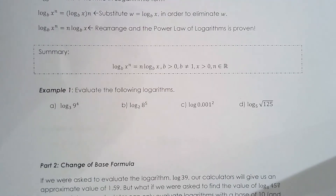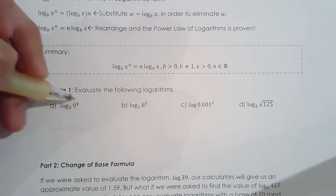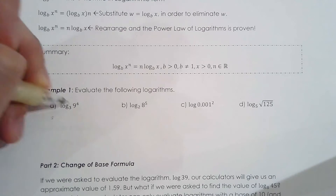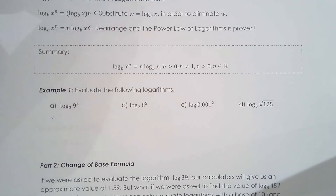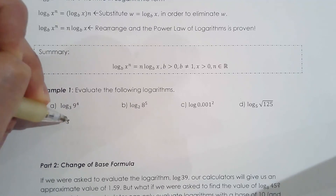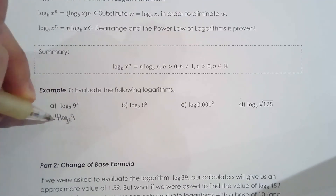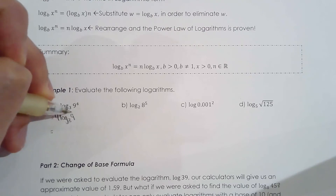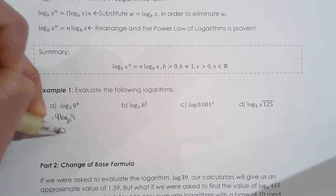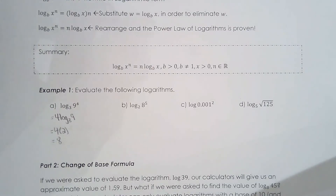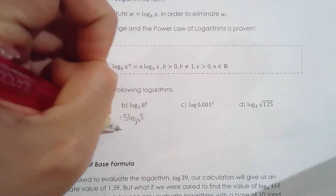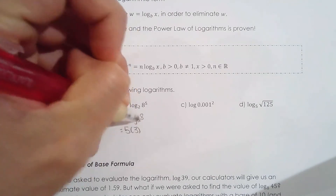Let's use the power law of logarithms. For log base 3 of 9 to the power of 4, you can apply the power law to get 4 times log base 3 of 9. Since 3 squared is 9, log base 3 of 9 equals 2, so 4 times 2 is 8. Similarly, applying the power law gives 5 times log base 2 of 8. Since 2 cubed is 8, that's 5 times 3, which equals 15.